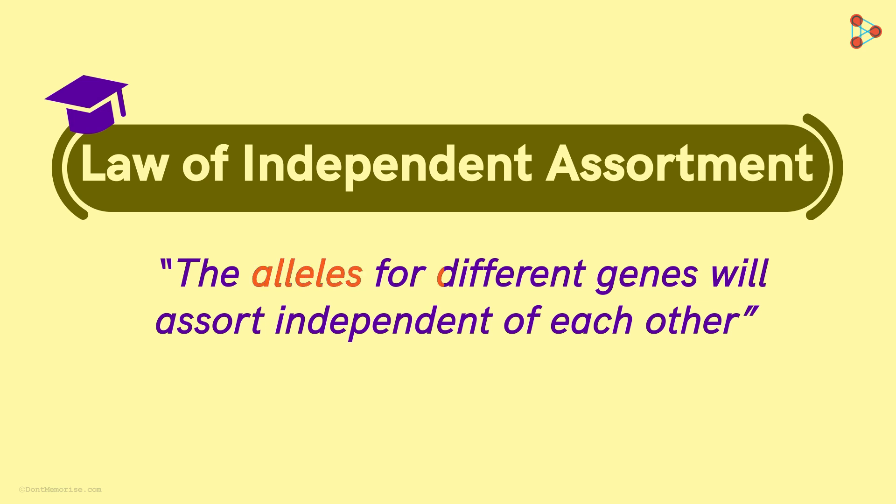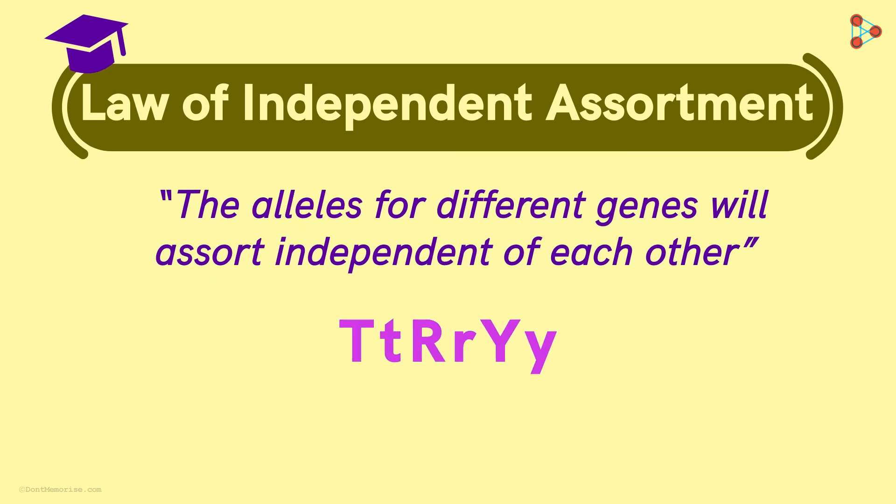According to the law, the alleles for different genes will assort independent of each other! So in simple words, the alleles T and t will assort independent of the other alleles R and r and even Y and y!